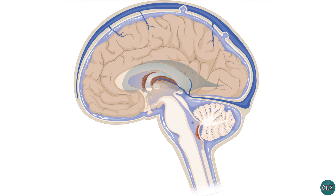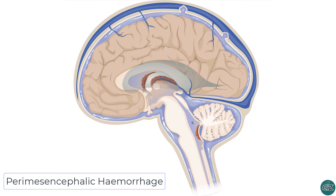The second most common cause of spontaneous subarachnoid haemorrhage is perimesencephalic haemorrhage. As the name suggests, this is blood within the subarachnoid cisterns around the midbrain. In this type, no cerebral aneurysm is identified and the cause of bleeding is thought to be venous in origin. Blood will be seen anterior to the midbrain and the pons, and due to the suspected venous origin, prognosis is significantly better than haemorrhage due to a ruptured arterial cerebral aneurysm.